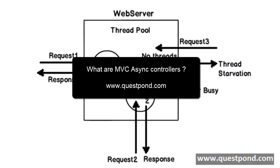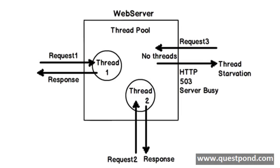In this video we will try to understand what exactly is this thing called MVC asynchronous controllers. The whole point why we have asynchronous controllers is to improve efficiency of thread pooling in web server. Before we go and see the demos of async controllers and how the code looks like, let's try to understand what problem asynchronous controllers try to solve.